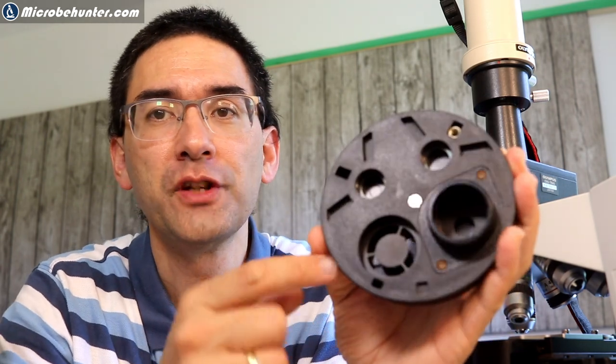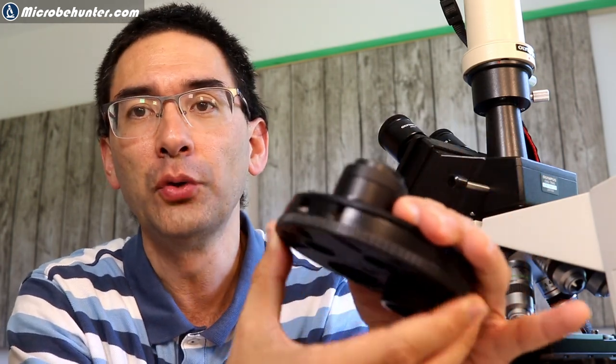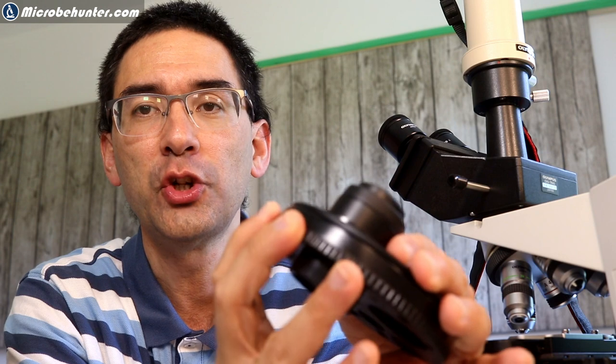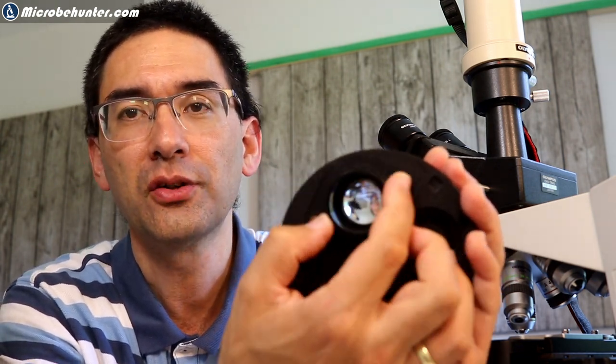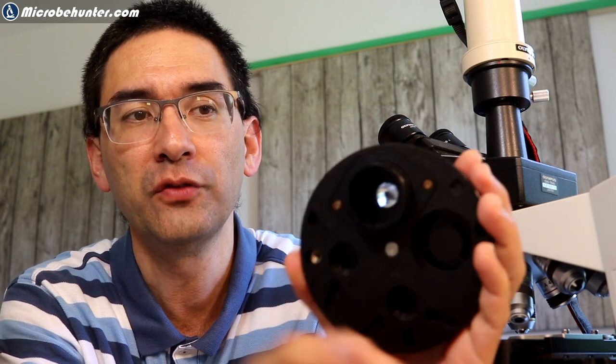It actually has four functions. If you look down here, by rotating the turret here, you can switch the functions. This one here is the regular bright field. That's the condenser diaphragm here, just a conventional bright field.